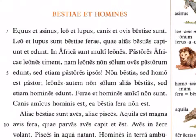Leo et lupus sunt bestiae ferae — the lion and the wolf are wild animals. Note that the adjective ferae comes second, after the noun, whereas in English we put it before. The lion and the wolf are wild animals quae alias bestias capiunt et edunt — which capture and eat other animals. In Africa sunt multi leones — in Africa there are many lions. Pastores Africai leones timent — the shepherds of Africa fear the lions. For the lions not only eat the shepherds' sheep, sed etiam pastores ipsos — but also the shepherds themselves.